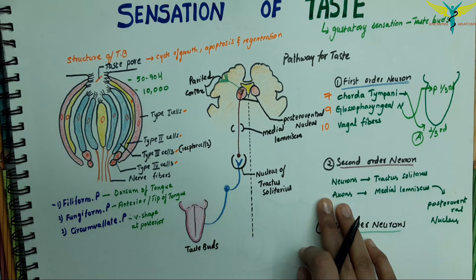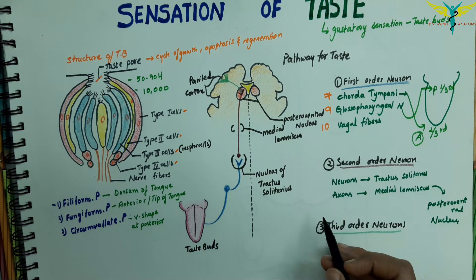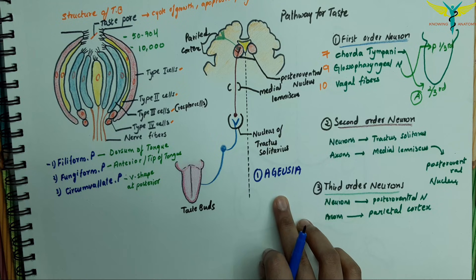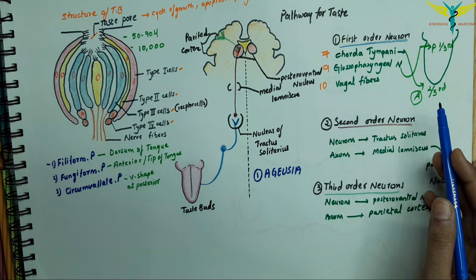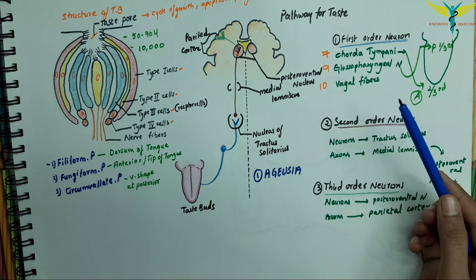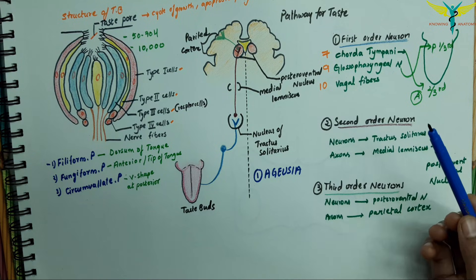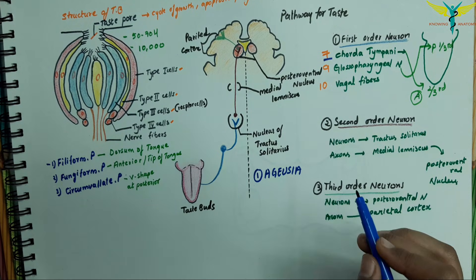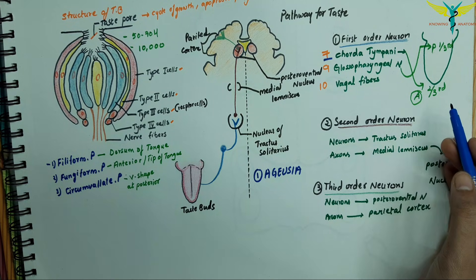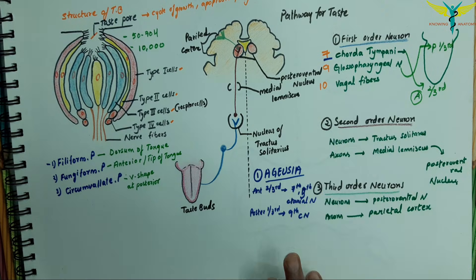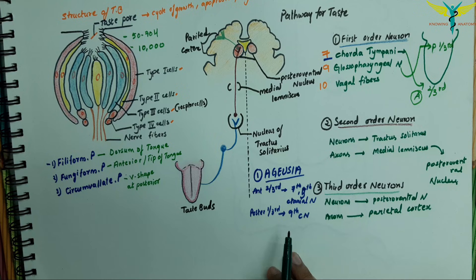Now let's cover the applied physiology, or abnormalities, of taste sensation. The first abnormality is ageusia — loss of taste sensation. Taste buds in the anterior two-thirds of the tongue are served by the chorda tympani branch of the facial nerve, which receives taste fibers via the lingual branch of the mandibular division of the trigeminal nerve. A lesion of the facial nerve (7th) or mandibular division of the trigeminal nerve (5th) causes loss of taste in the anterior two-thirds of the tongue. A lesion of the glossopharyngeal nerve (9th) causes loss of taste in the posterior one-third. Temporary loss of taste can occur with drugs like captopril and penicillamine, which contain sulfhydryl groups.